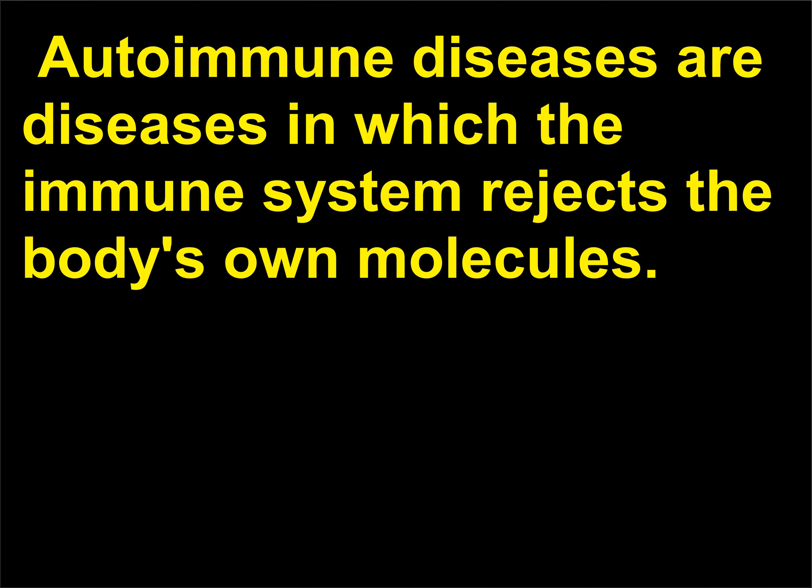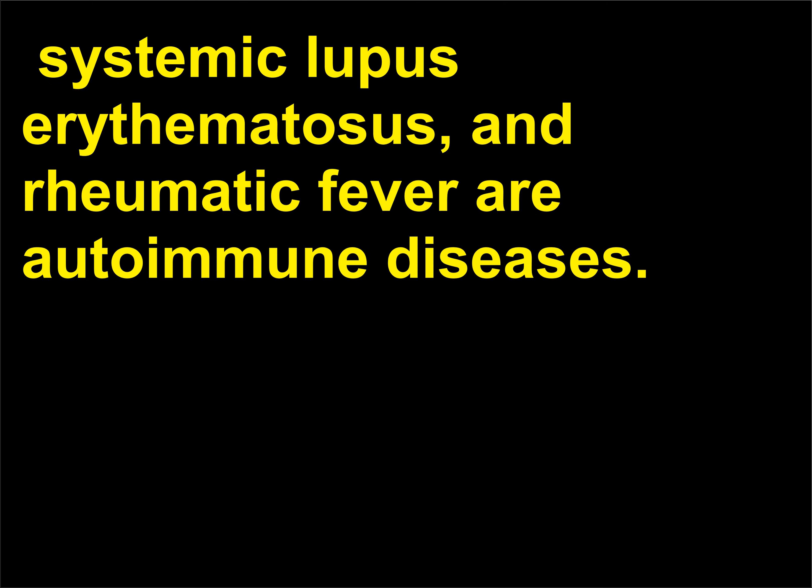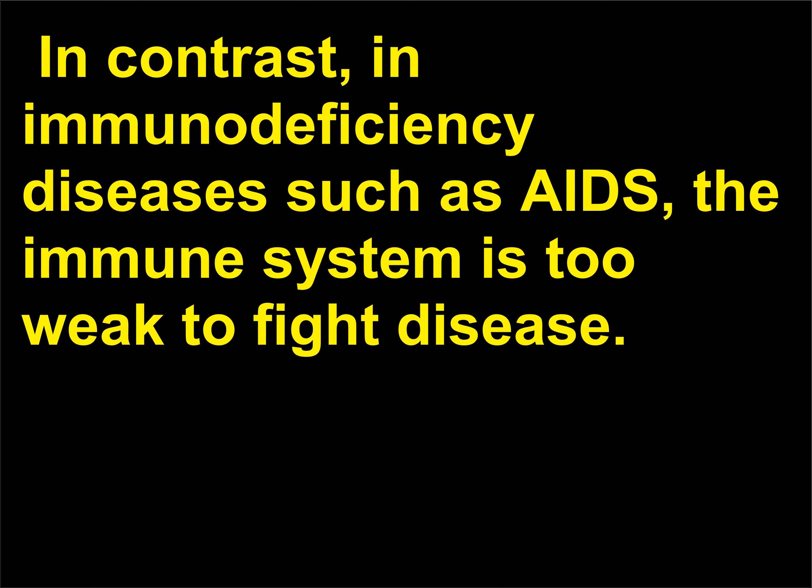Autoimmune diseases are diseases in which the immune system rejects the body's own molecules. Insulin-dependent diabetes, rheumatoid arthritis, systemic lupus erythematosus, and rheumatic fever are autoimmune diseases. In contrast, in immunodeficiency diseases such as AIDS, the immune system is too weak to fight disease.